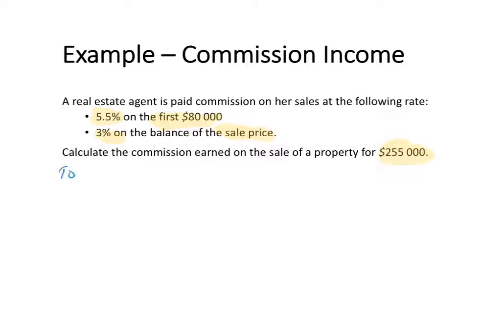The first step is to calculate the total sales amounts. The first $80,000 is going to earn 5.5%. And then the balance of the sale is going to be calculated at $255,000 minus $80,000, which is $175,000.